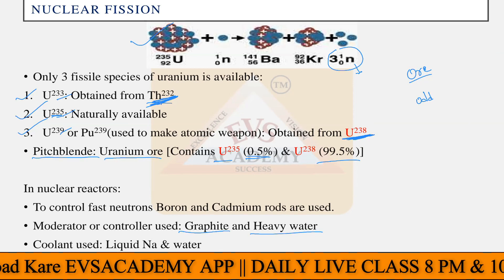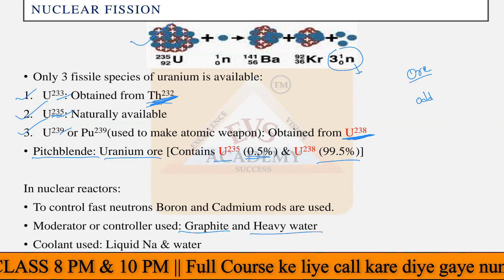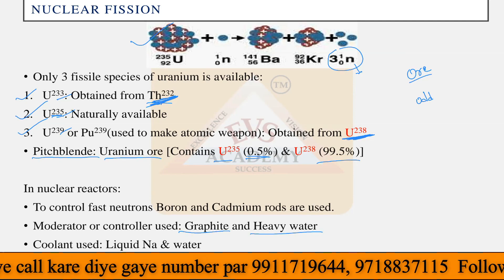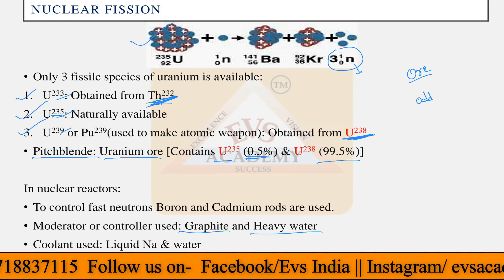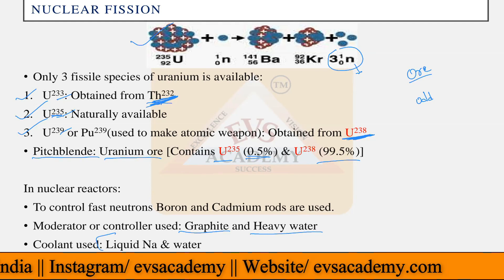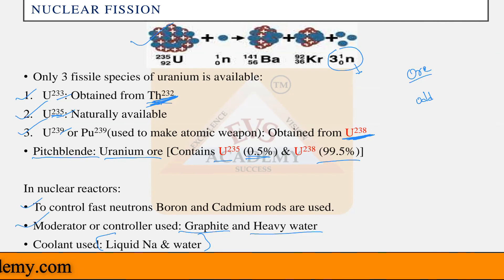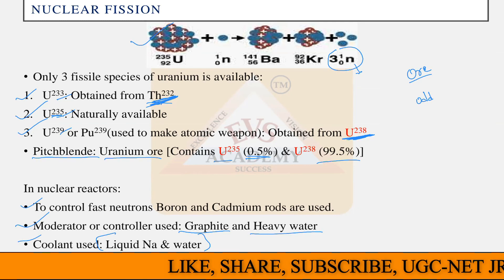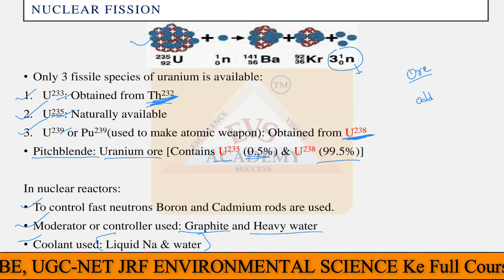If a huge uncontrolled reaction starts, it will behave like an atomic bomb. That is why the moderator or controller is very important. There is also a high amount of energy released, so a coolant is needed to cool down the reaction and maintain temperature. In nuclear reactors, liquid sodium or liquid water is used as the coolant. Remember these three components — neutron control rods, moderator, and coolant — as they are asked in examinations.